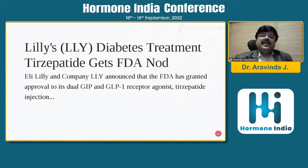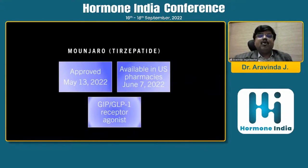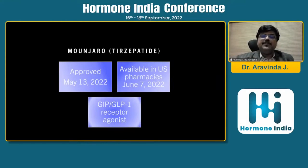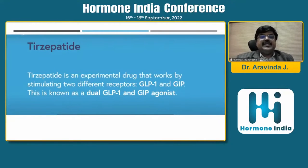Regarding Lilly's diabetes treatment — tirzepatide — the FDA has granted approval to its dual GIP and GLP-1 receptor agonist, the tirzepatide injection. It comes under the name Mounjaro. It was approved recently, in May 2022, and is available in US pharmacies. The FDA stated that tirzepatide represents an important advance in the treatment of type 2 diabetes, lipid disorders, and obesity. It is a drug that works by stimulating two different receptors — GLP-1 and GIP — known as a dual GLP-1 and GIP agonist.